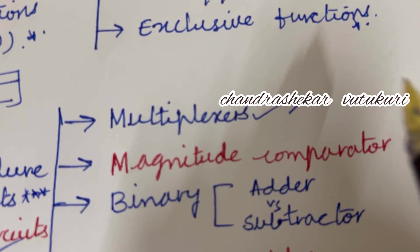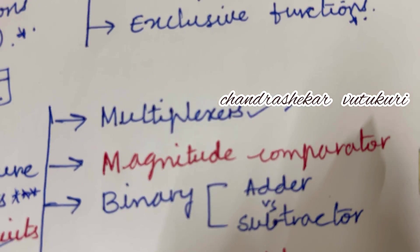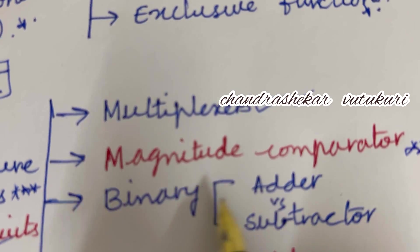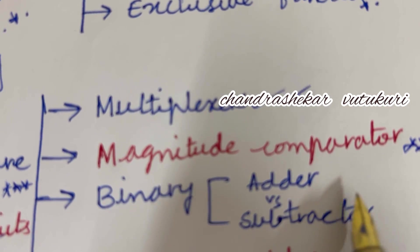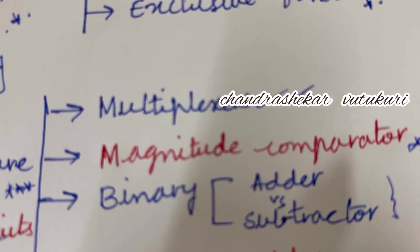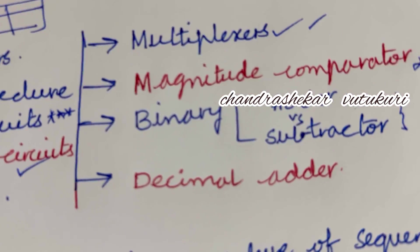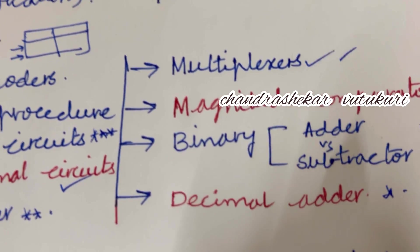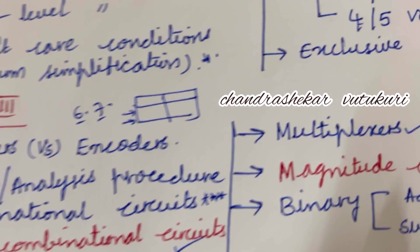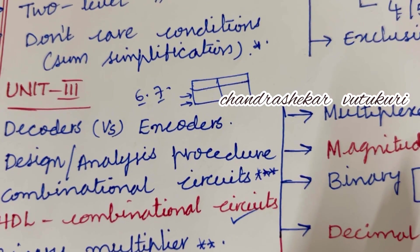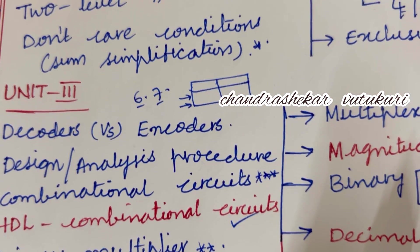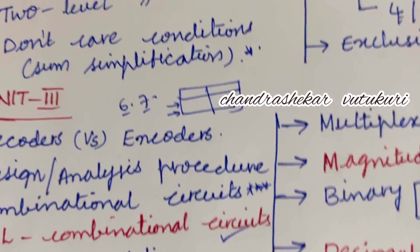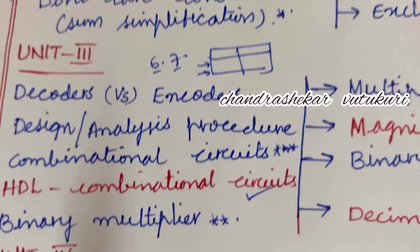Multiplexer is set as both a short and long question. Magnitude comparator may be a short question. Binary adder versus subtractor may be the long question this time, and decimal adder may also be a 5-mark question. These are very important concepts from Unit 3 for question numbers 6 and 7.